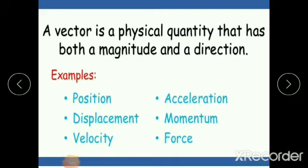The next one is a vector quantity. A vector is a physical quantity that has both magnitude and direction. Scalar involves only magnitude, but a vector has both magnitude and direction. For example: position, displacement, velocity, acceleration, momentum, and force are vector quantities.